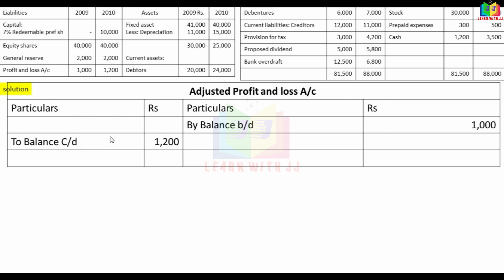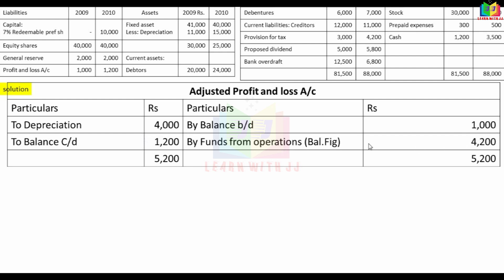Depreciation is added: from 11,000 to 15,000, so depreciation for the period is 4,000. The balancing figure gives us funds from operations: 4,000 plus 1,200 equals 5,200. This is the funds from operations figure for the fund flow statement.